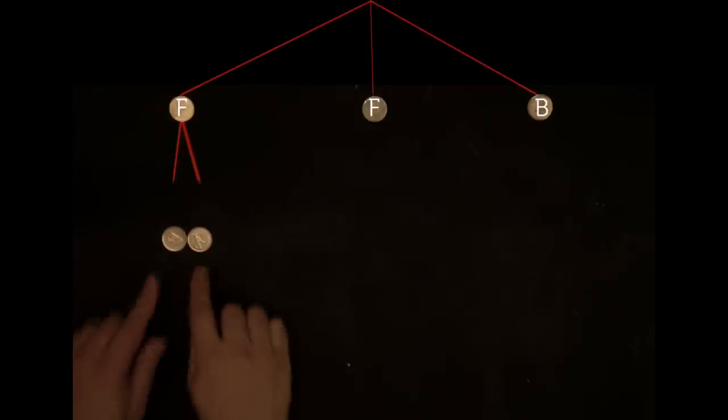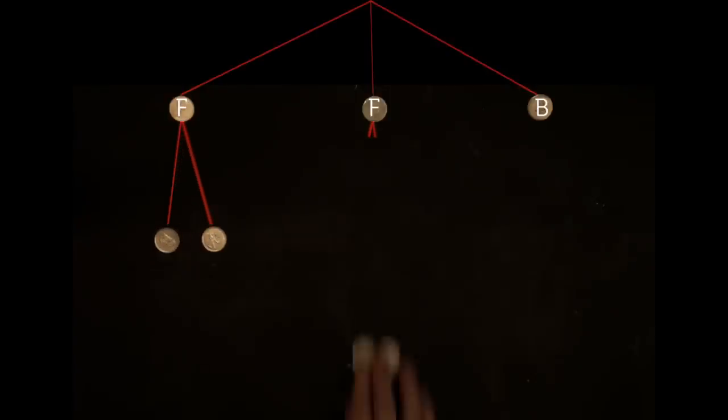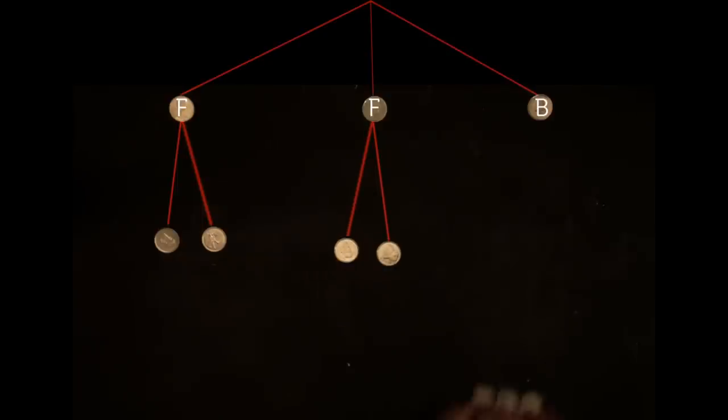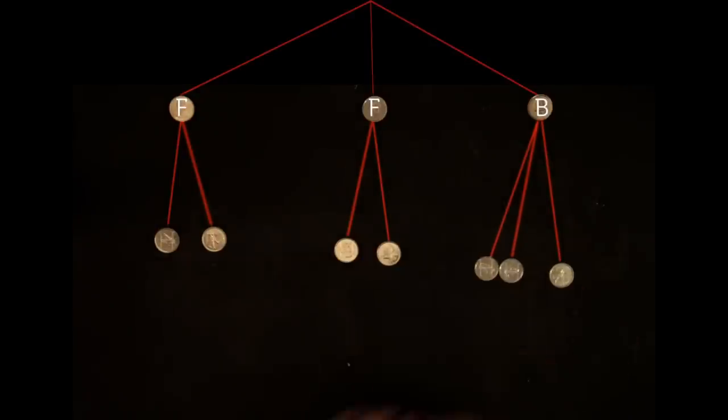The next event, the coin is flipped. Each fair coin leads to two equally likely leaves, heads and tails. The bias coin leads to three equally likely leaves, two representing heads, and one representing tails.